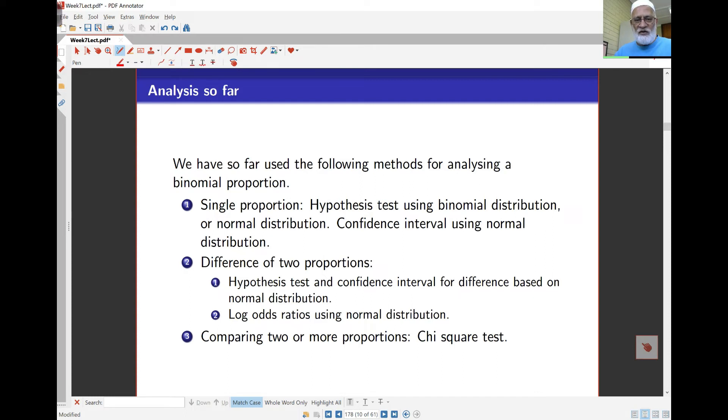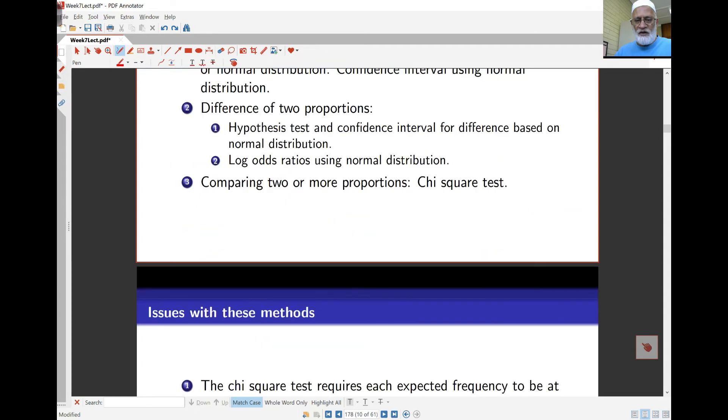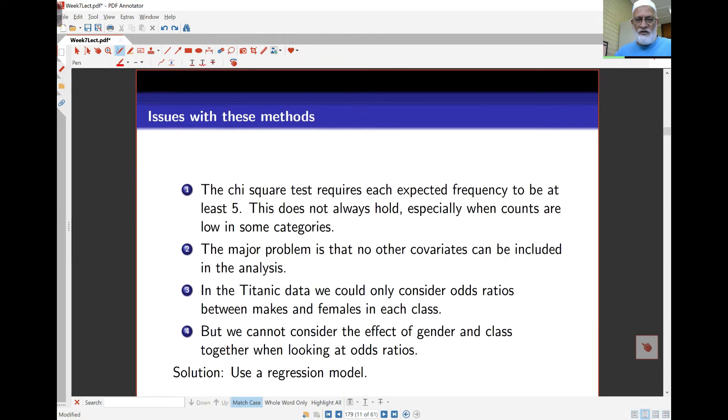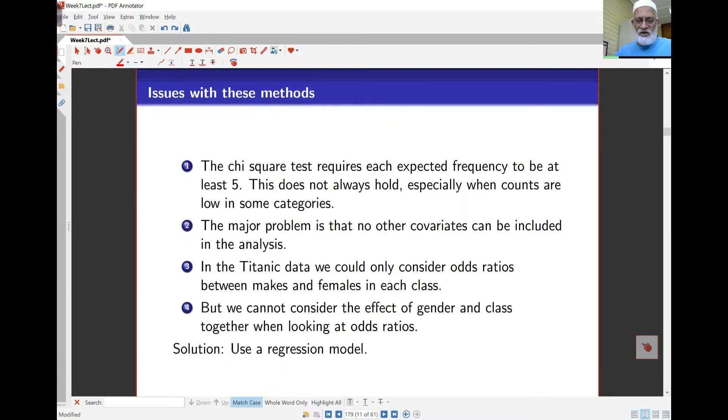The problem with that is we can only include two categorical variables in a two-way table, so we can't use any of the covariates. What we're going to do now is use some regression model for this kind of data so we can include covariates in the models as well.